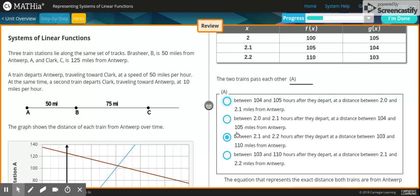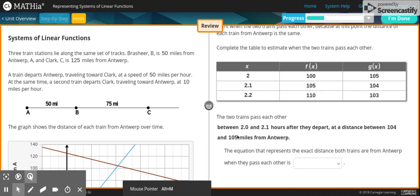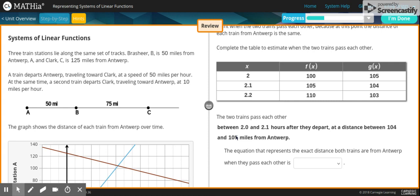Or between 2.1 and 2.2 hours after they depart at a distance between 103 and 110 from Antwerp. Or between 103 and 110 hours after they depart at a distance between 2.1 and 2.2 miles from Antwerp. The correct answer is between 2.0 and 2.1 hours after they depart at a distance between 104 and 105 miles from Antwerp.